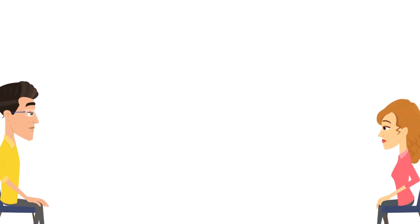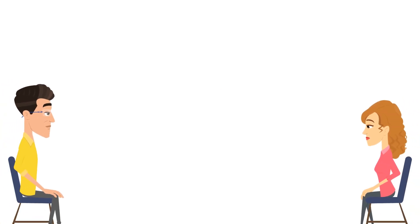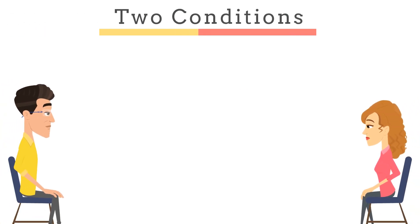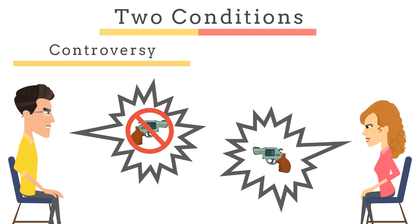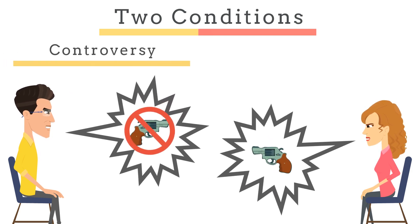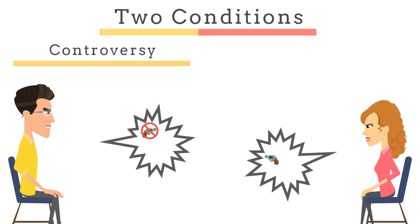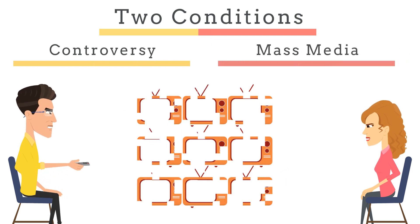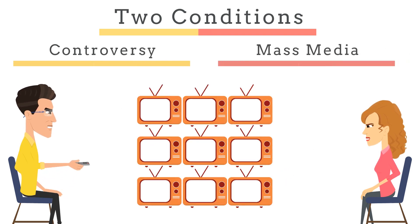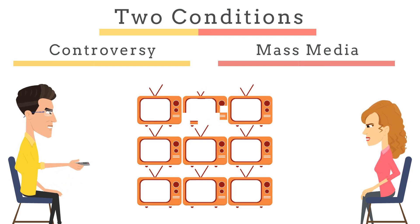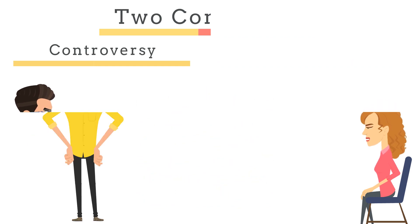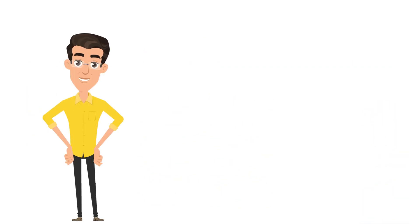But the effect doesn't always occur. There are two main conditions for the occurrence of the hostile media effect. First, it has to be a controversial issue that is important for the recipient. And secondly, it has to be in the context of the mass media, and the recipient has to be aware that a huge audience is being reached.